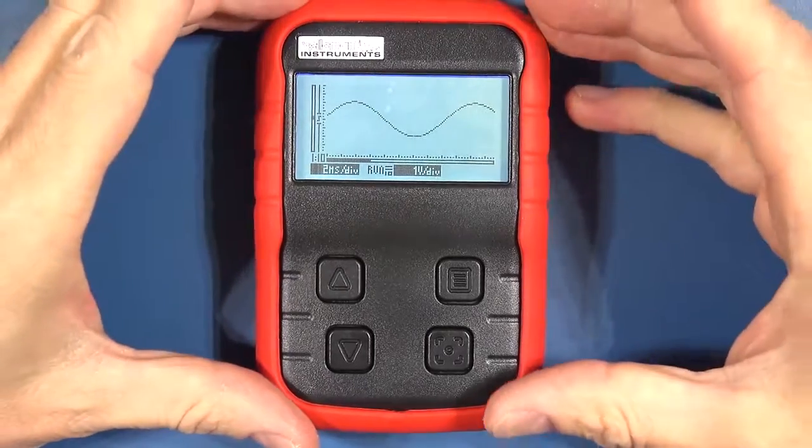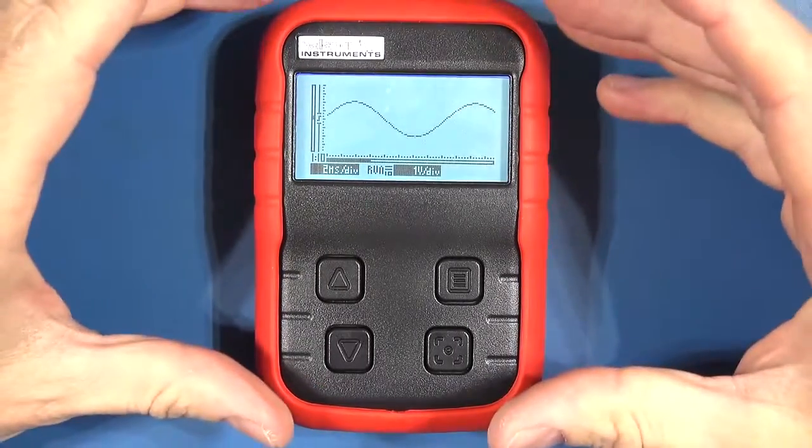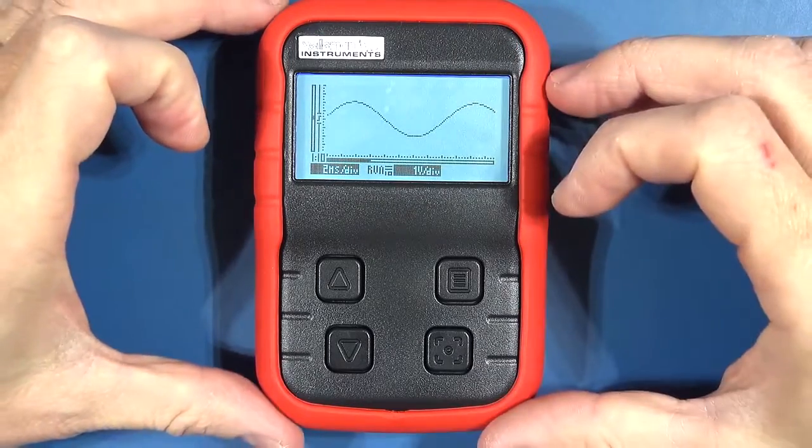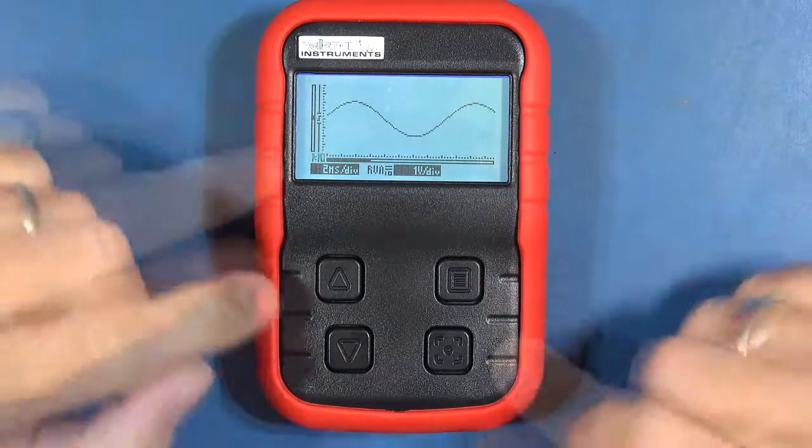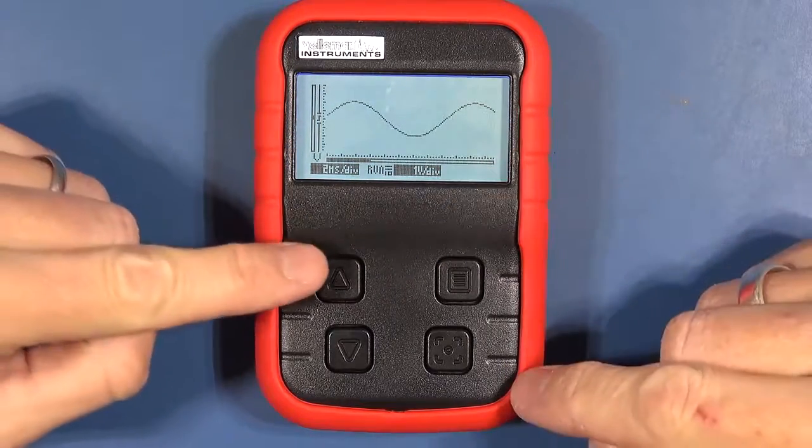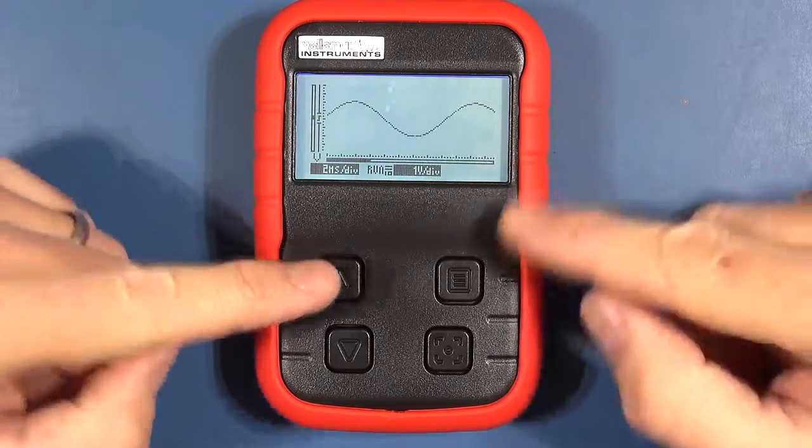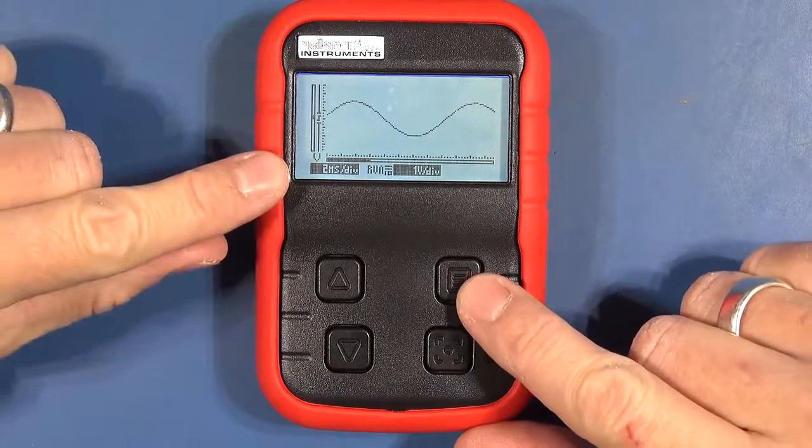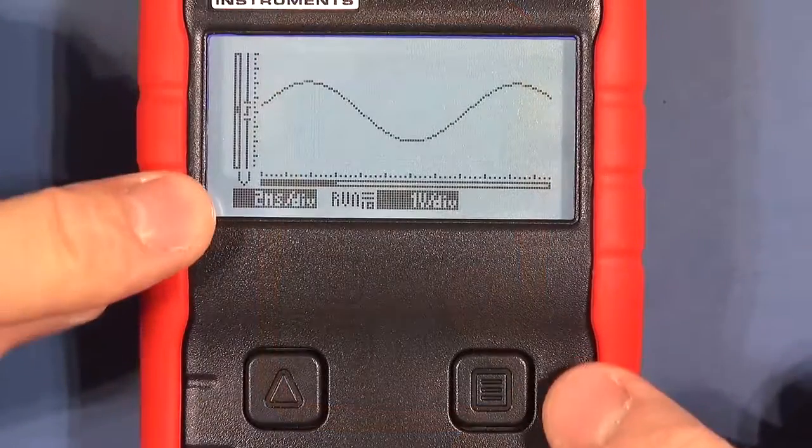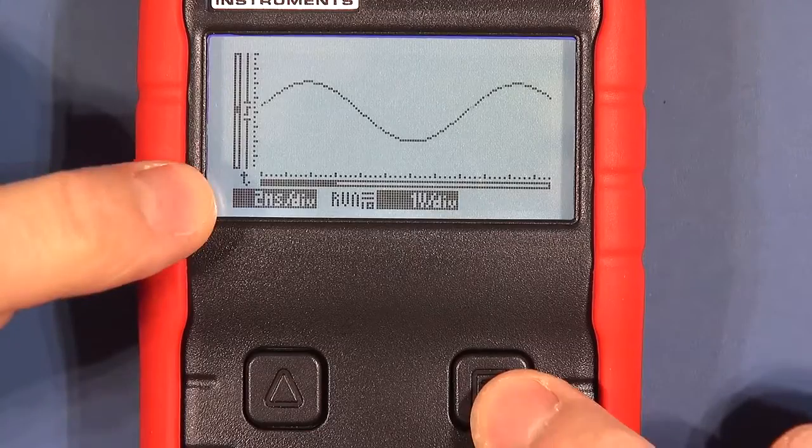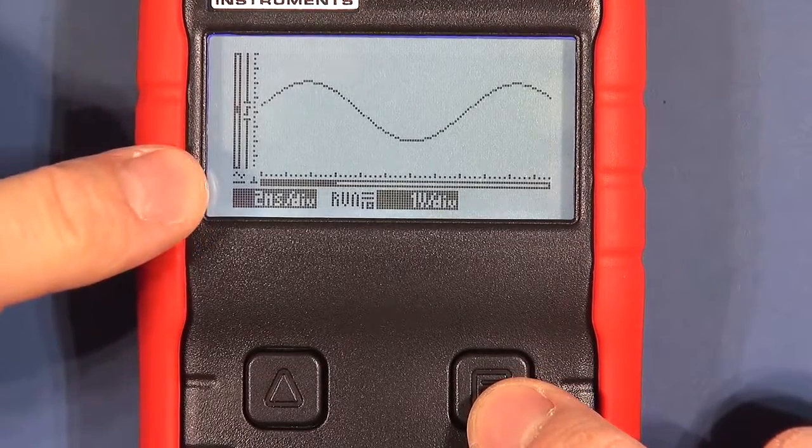Once you get the knack of it it's okay but it certainly is quirky when you're trying to make adjustments. Now at the moment I've got it set to a quick menu function which will allow me to change the volts per division and the time base on the actual display itself without having to go into the menu. So if you see when I push the menu key now I've got volts displayed and I can toggle through my volt setting, a time base or the coupling mode.